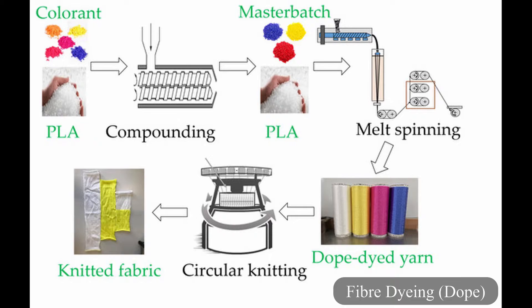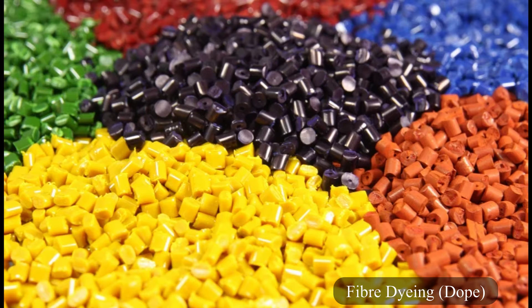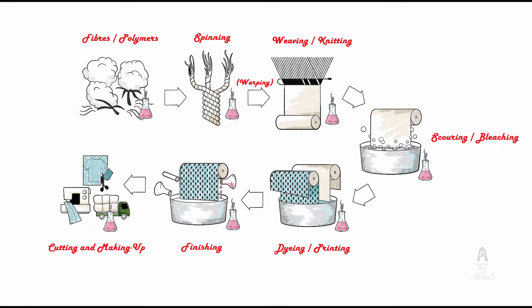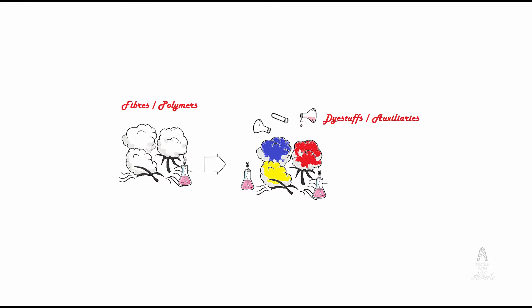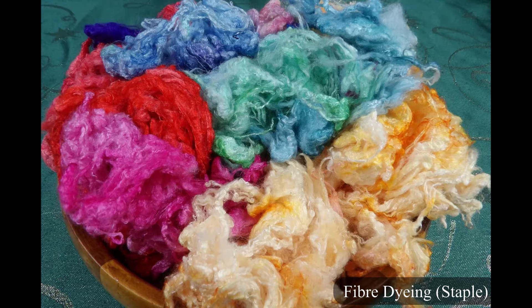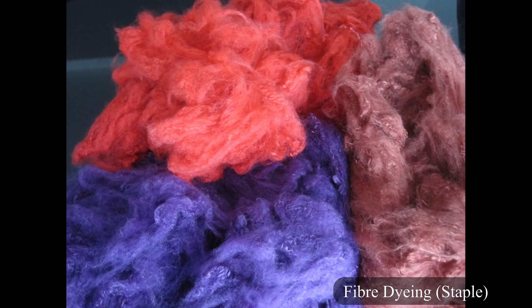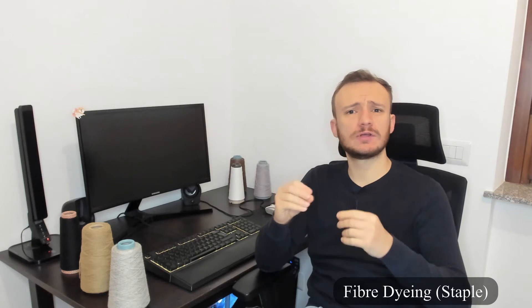First of all we have fiber dyeing. Fiber dyeing can be mass dyeing or dope dyeing in case of synthetic or artificial fibers — you dye the fibers in mass batches during extrusion, for example. On the other hand, if we talk about a natural fiber such as cotton or hemp, there is staple dyeing. You can indeed dye the staple fibers before the spinning processes. It's interesting because in this case you're dyeing an agricultural product, not a textile product, because spinning has not been performed yet.